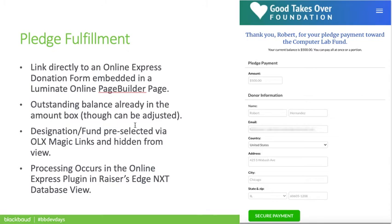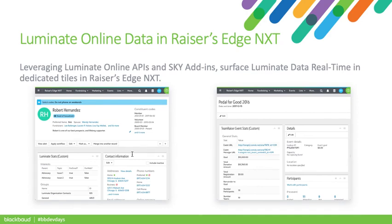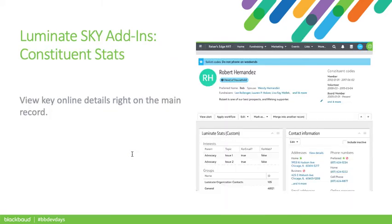So we have options to enhance Luminate Online features — what about enhancing what we see in Razor's Edge NXT? We got a peek of this during the summer sessions, but with our recent product update briefings we're able to share more information. Leveraging Luminate Online APIs and Sky add-ins, you can surface Luminate Online data in real-time in dedicated tiles in Razor's Edge NXT without first needing to figure out where they may need to live within Razor's Edge. With the APIs, we're pulling this directly from Luminate Online. You can view Luminate data right on the main constituent record, along with their other data that lives directly within Razor's Edge NXT.